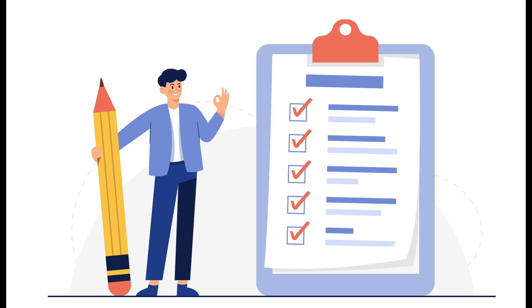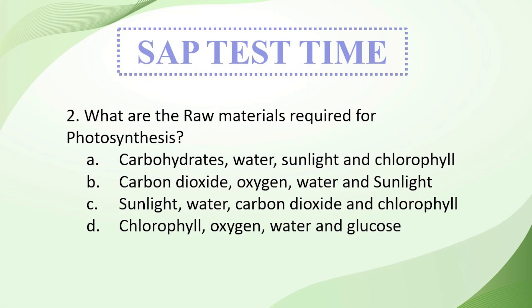Think and note down your answer so that you can check it at the end of the video. Your second question: what are the raw materials required for photosynthesis? A: carbohydrates, water, sunlight and chlorophyll; B: carbon dioxide, oxygen, water and sunlight; C: sunlight, water, carbon dioxide and chlorophyll; D: chlorophyll, oxygen, water and glucose. Read the question carefully and attempt the answer.